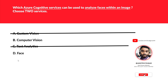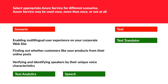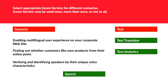The next drag-and-drop is about Azure services. For enabling a multilingual user experience on your corporate website — translating one language to another — the answer is Text Translator. For finding out whether customers like your product from their online posts, it is Text Analytics, since there's no voice element in the question. For verifying and identifying speakers by their unique voice characteristics, the keyword is unique voice characteristics, so Speech is the correct option.